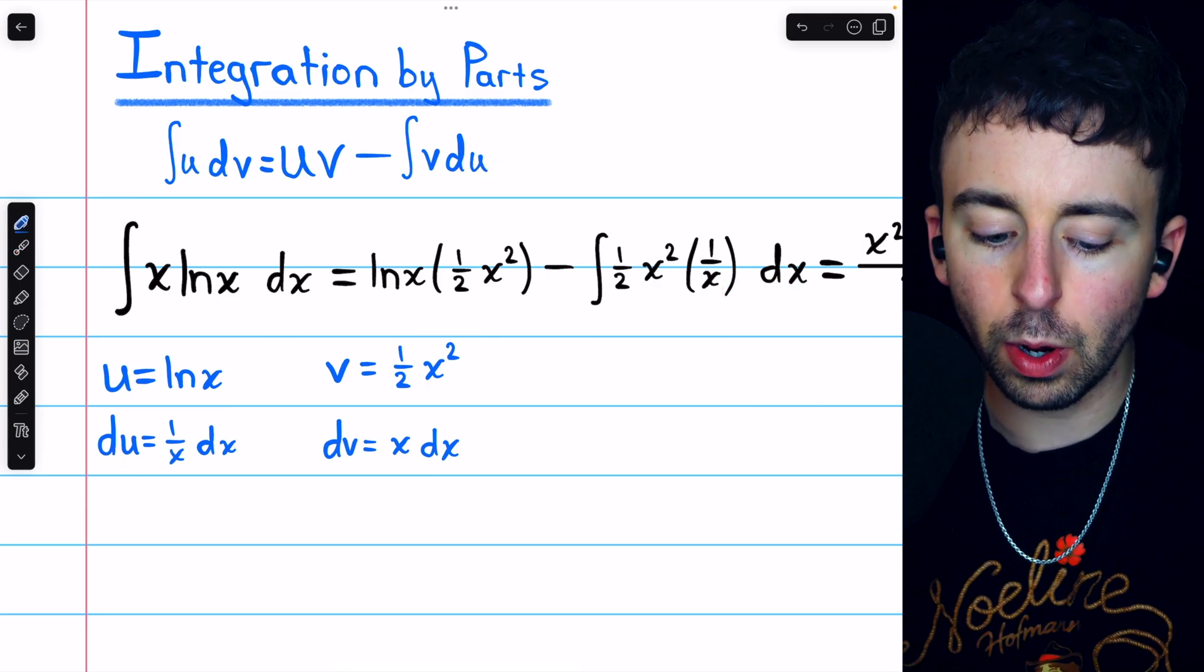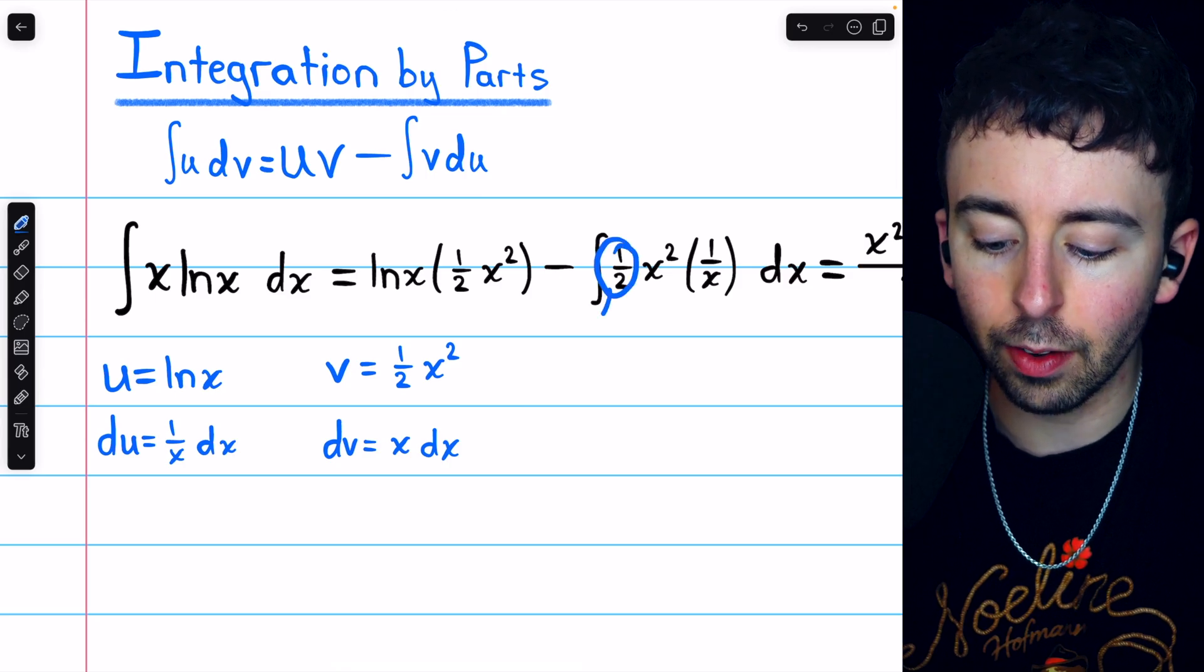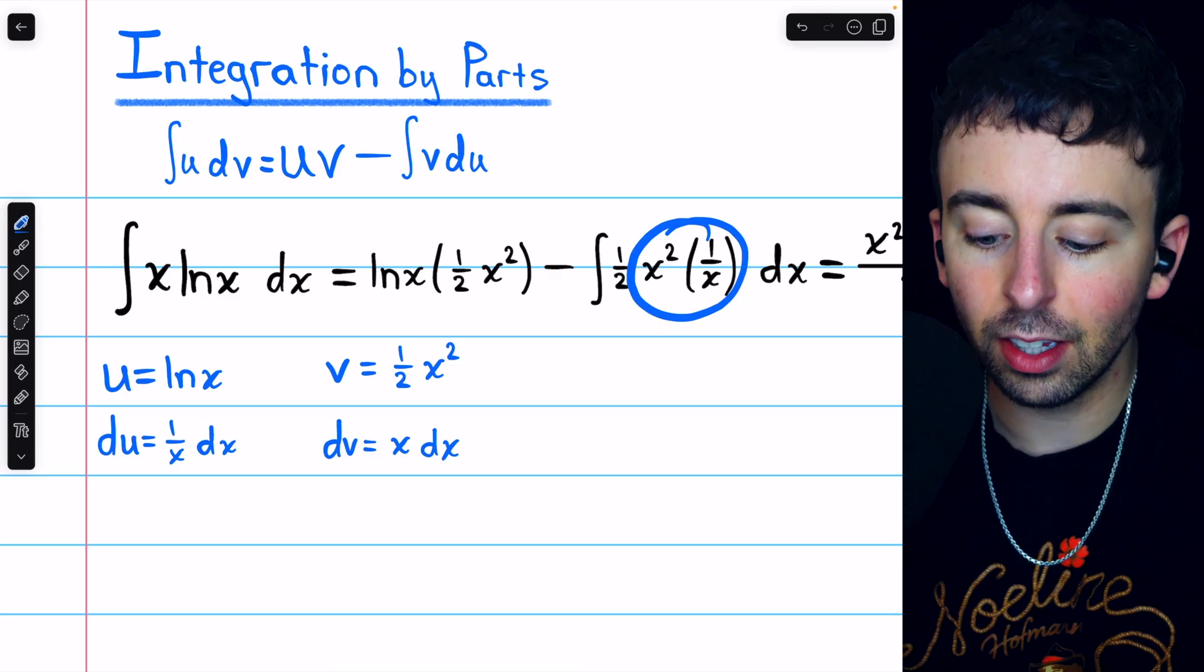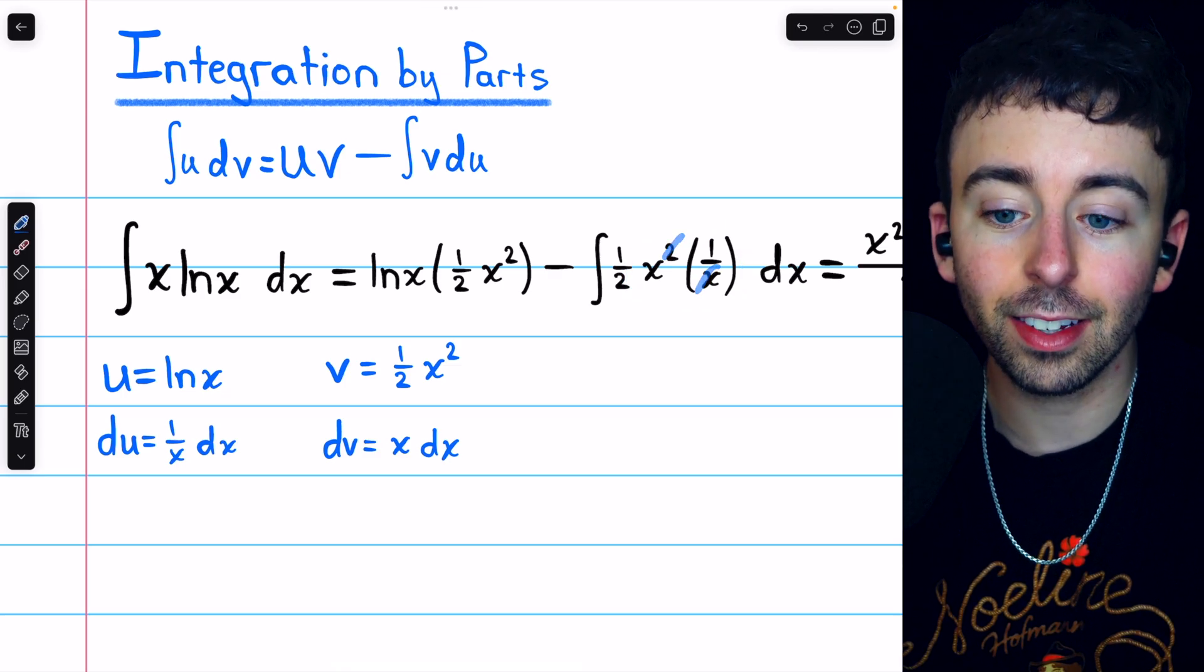You can see that this works pretty well, because we can take the 1 half out of the integral. That doesn't matter too much. And then x squared times 1 over x, we'll be able to cancel out a factor of x.